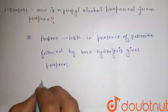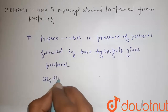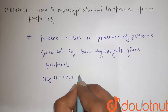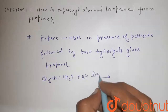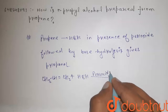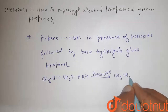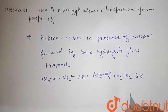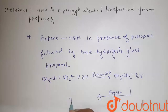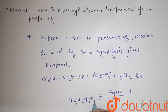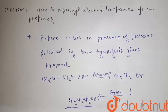The reaction proceeds like this: CH3CH=CH2 plus HBr in the presence of peroxide gives CH3CH2CH2Br, which is then treated with NaOH — that is, base hydrolysis — to give CH3CH2CH2OH. This is n-propyl alcohol.